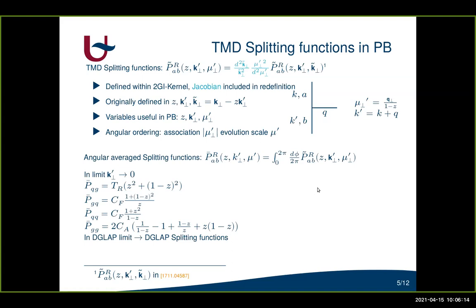We can also define angularly averaged TMD splitting functions, where we take the magnitude of incoming transverse momentum and the rescaled emitted transverse momentum to be constant and integrate over all angles between those two transverse momenta. When we take the limit of the incoming transverse momentum going to zero, all these angularly averaged TMD splitting functions reduce to the DGLAP splitting functions, which is very important since in the parton branching method we use these DGLAP splitting functions.